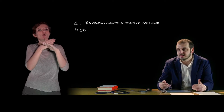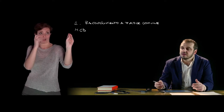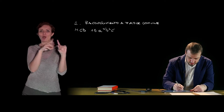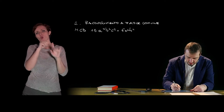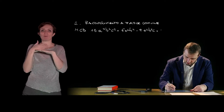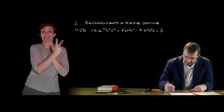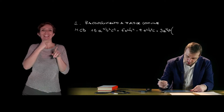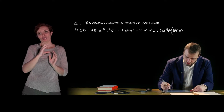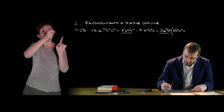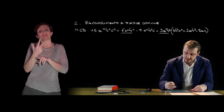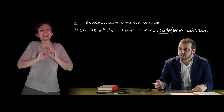Una volta trovato il massimo comun divisore, sarà possibile mettere in evidenza tale fattore ed effettuare il raccoglimento a fattore comune. Prendiamo un esempio: abbiamo un polinomio con i termini 6a⁴b⁴ meno 9a⁴b²c. Il massimo comun divisore ha coefficiente 3 e parte letterale a³b². Questo moltiplica rispettivamente 5b²c² per il primo monomio, 2ab² per il secondo, e 3ac per il terzo. Questa tecnica è il primo passaggio per verificare la possibilità di scomporre un polinomio.